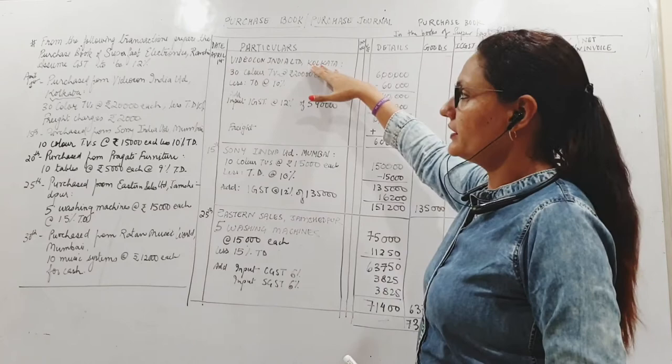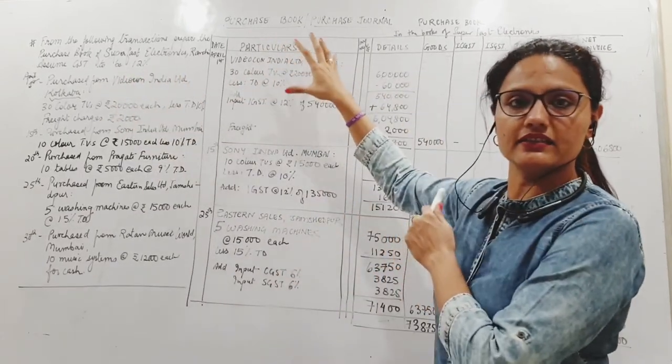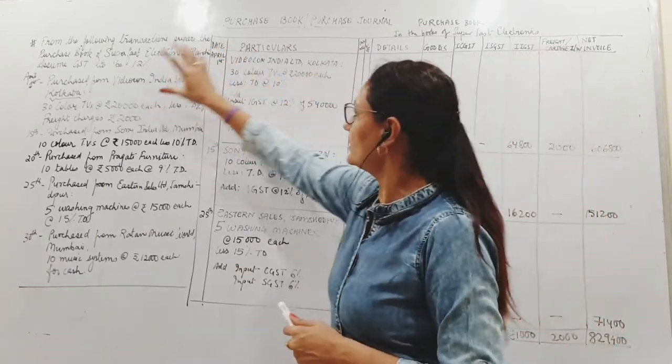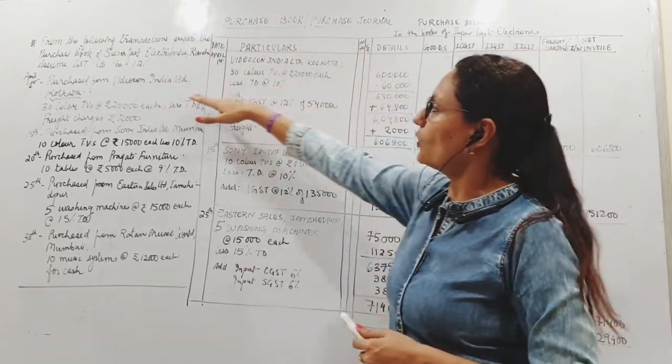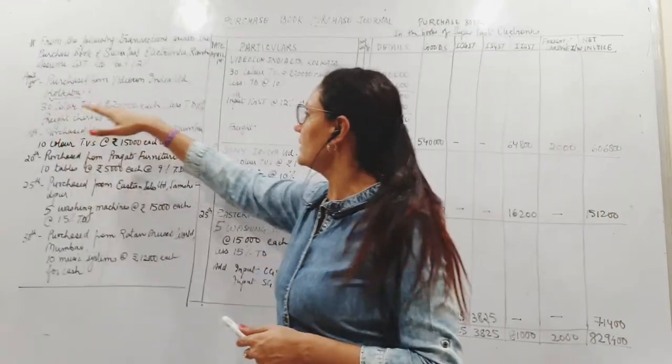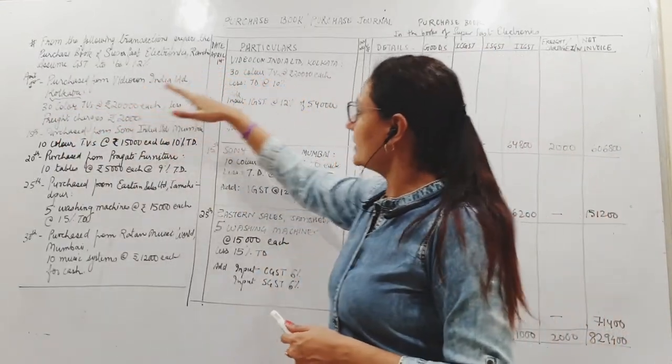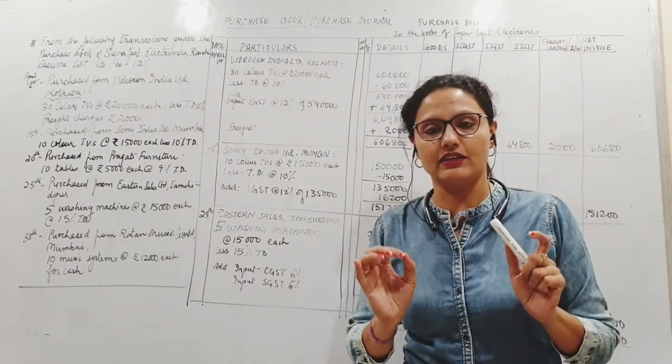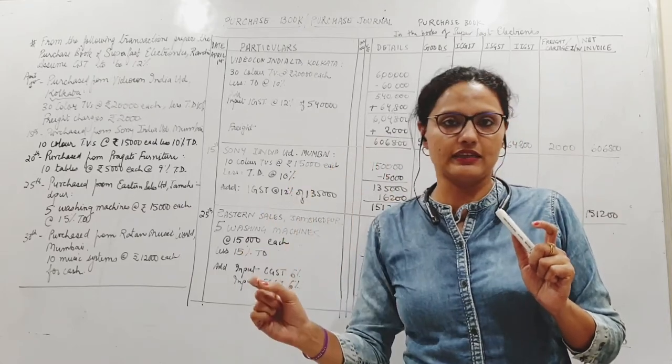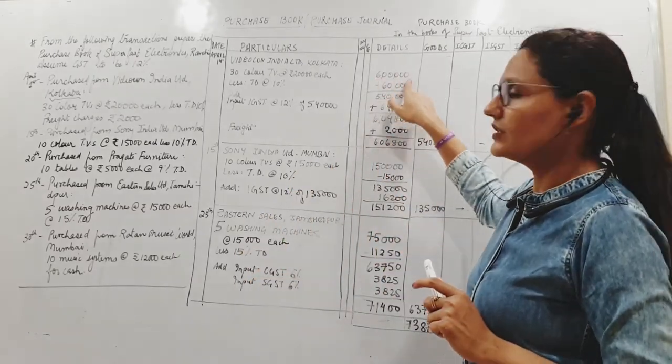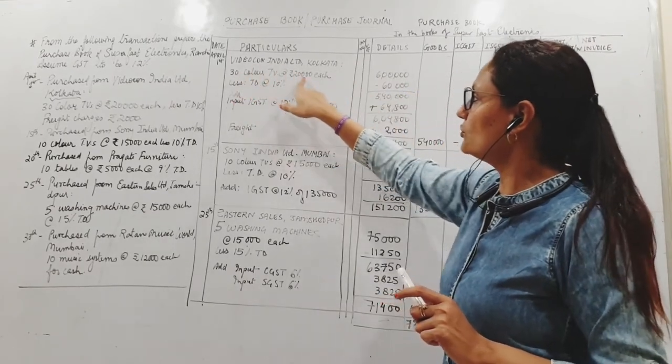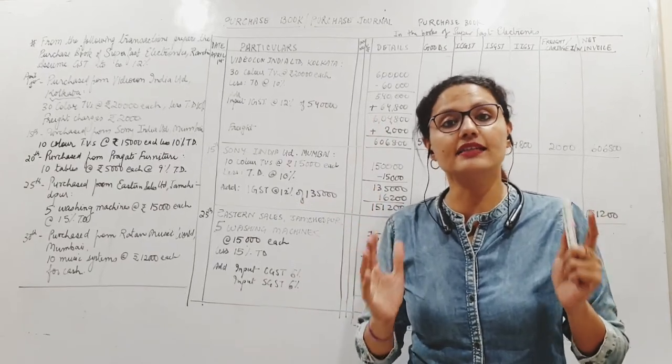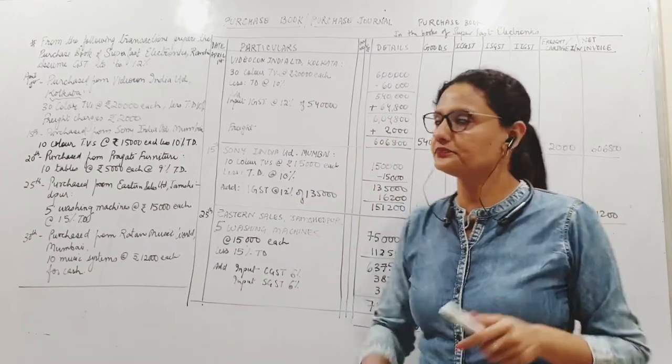Video Con India Limited, Kolkata - name of the creditor, my supplier from whom I'm purchasing. What are we purchasing exactly? 30 color TVs at 20,000 each. If you are purchasing 30 TVs, each one is costing 20,000, so total will be 6 lakhs. 30 into 20,000 equals 6 lakhs. I have to write it here, meaning total value of the goods. The list price is 6 lakhs.